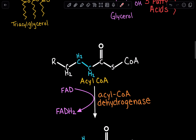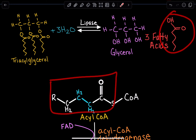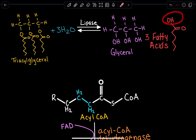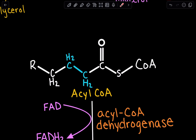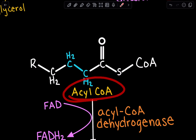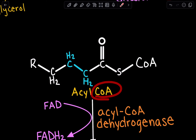Here we have our fatty acid. This represents the fatty acid structure, and what we've done is replaced the hydroxyl with a coenzyme A group. This R just represents the number of carbons we have — it could be 11, 12, or however many carbons. Overall, this is referred to as an acyl-CoA, where we had our fatty acid and added a CoA group.